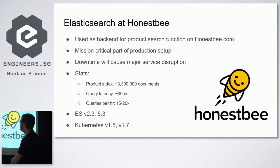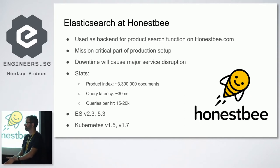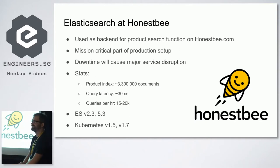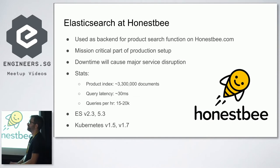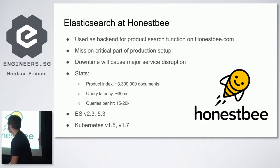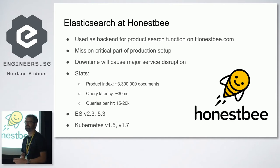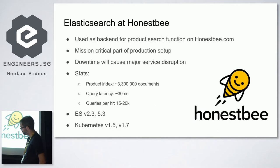We're delivering groceries and food, which means we have a lot of products. Our product index is about 3 million documents. We're getting about 15 to 20k queries per hour into our cluster. Latency is about 30 milliseconds, so it's pretty fast. We're running a bit of an older version — Elasticsearch 2.3 — mostly due to our backend not supporting anything better yet, though we're working on refactoring.